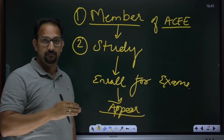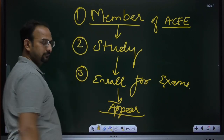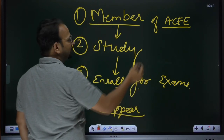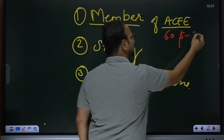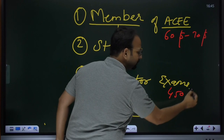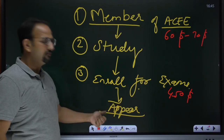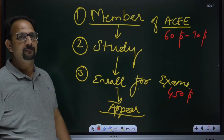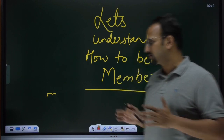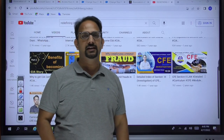Once you feel your study is enough and you are ready to write the exam, you can enroll for the examination. Just for your knowledge, the membership fees will cost around 60 to 70 US dollars, and enrollment for the examination comes to around 450 US dollars. Once done with all these steps, you can appear for the examination.